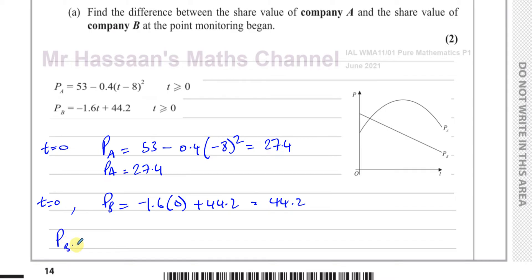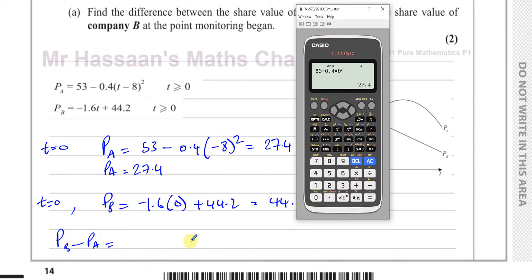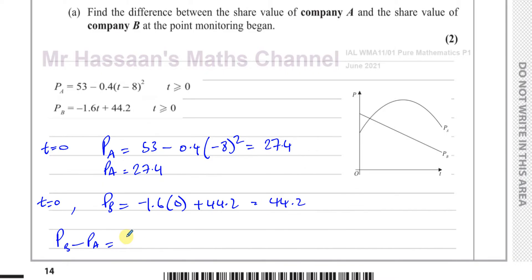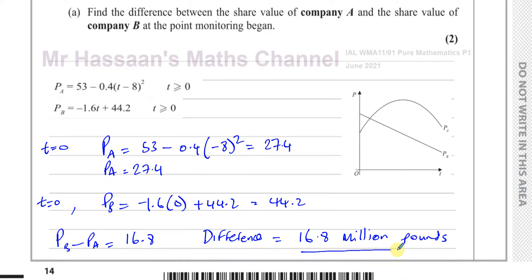So PB − PA = 44.2 − 27.4 = 16.8. Therefore, the difference is 16.8 million pounds. You have to be very careful to write the unit properly — don't just put 16.8 as your answer. It's 16.8 million pounds. You could also write 16,800,000. You will definitely lose a mark if you omit the unit.